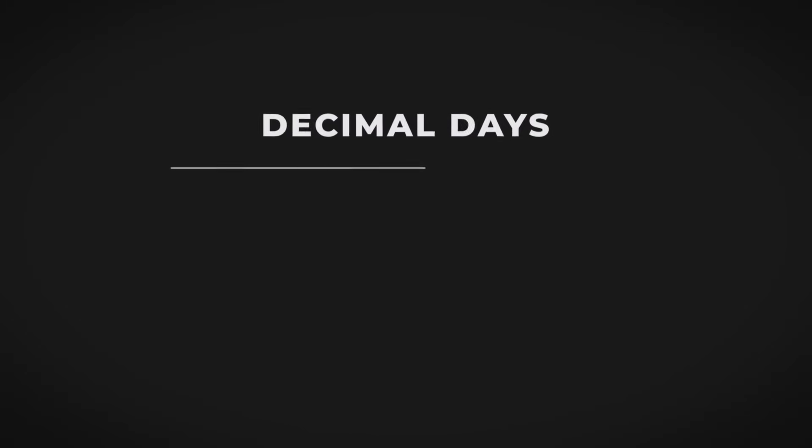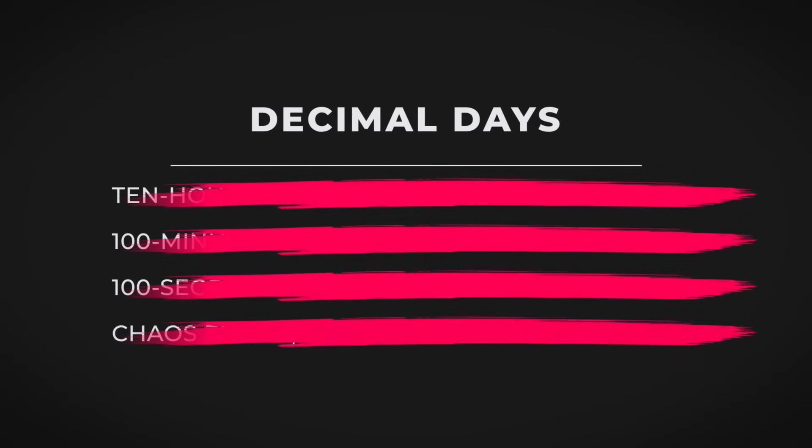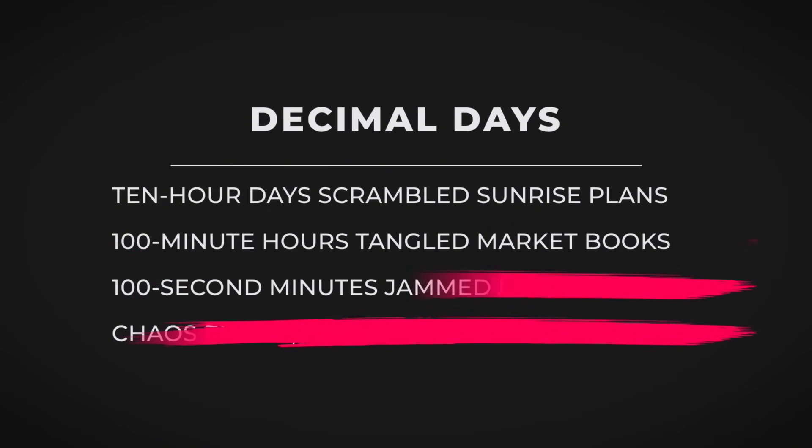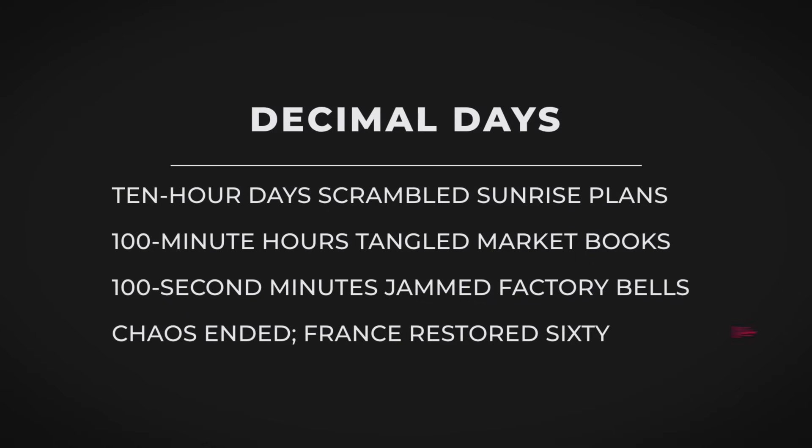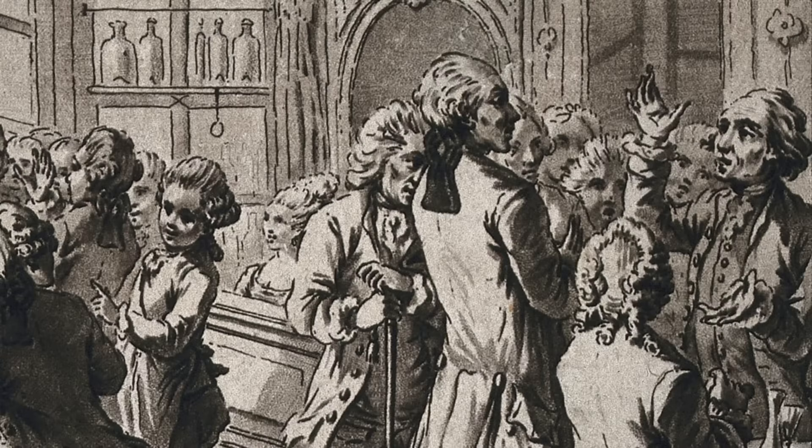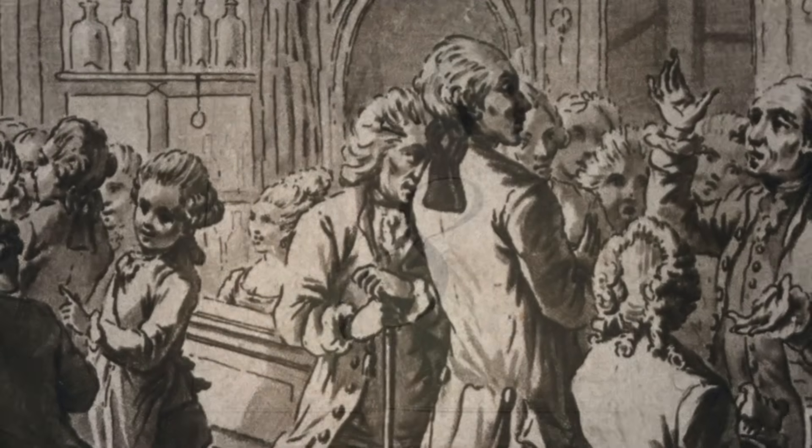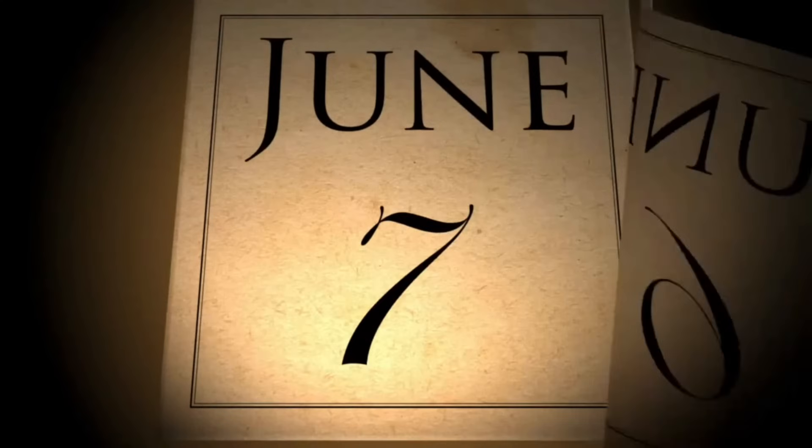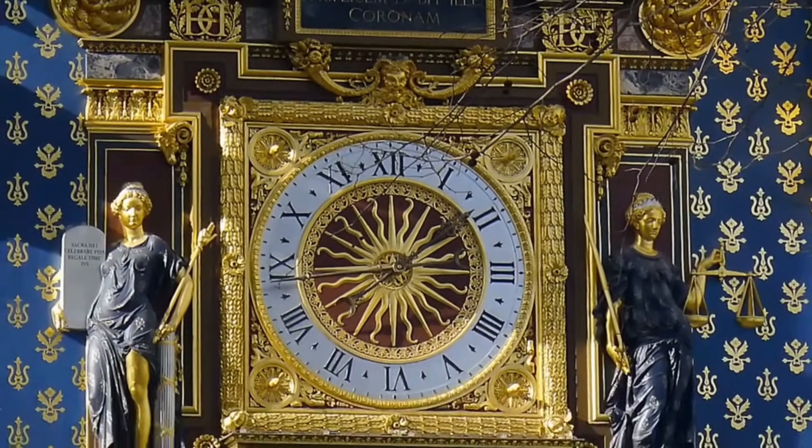In 1793, French revolutionaries tried to sweep away the old order with decimal time: 10 hours in a day, 100 minutes per hour, 100 seconds per minute. Merchants grumbled, workers missed appointments, and clockmakers cursed their new dials. Decimal time lasted barely two years before Paris returned to the old system.